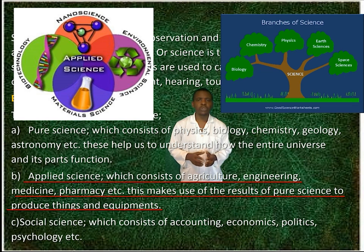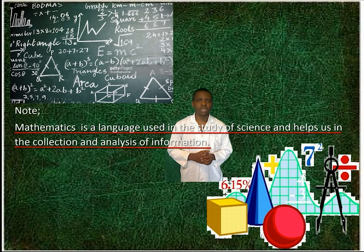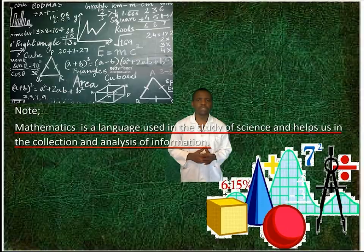Applied Science makes use of the results of Pure Science to produce things and equipment. Social Science consists of Accounting, Economics, Politics, Psychology, etc. Mathematics is a language used in the study of science and helps us in the collection and analysis of information.